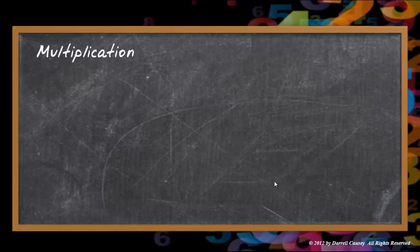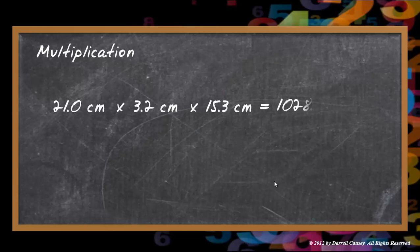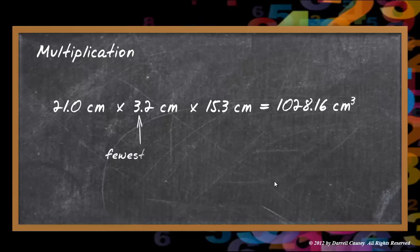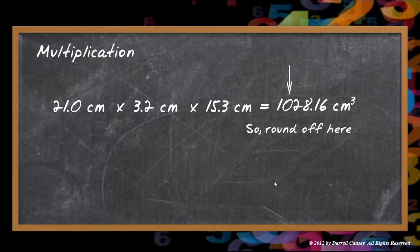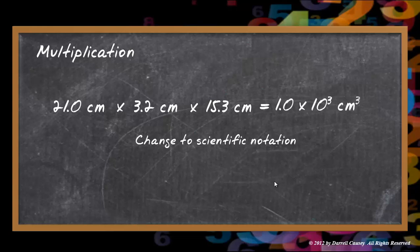Let's do a multiplication problem. Centimeters times centimeters times centimeters is cubic centimeters — and remember, a cubic centimeter is the same as a milliliter. The fewest sig figs would be two, so we're going to round off at the hundredths place — just two digits. Let's write that in scientific notation so we can show our sig figs much easier. If you're not sure about scientific notation, there's a video for that too.